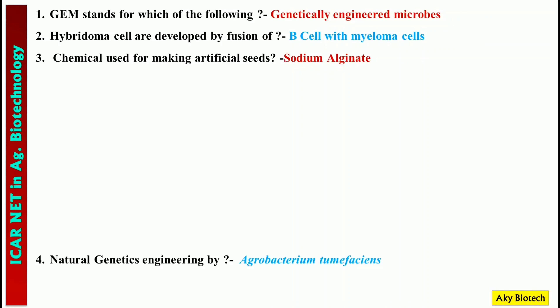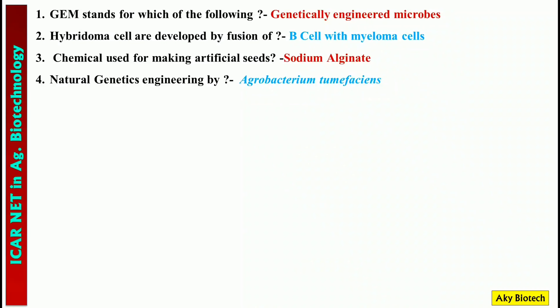Question 4: Natural genetic engineering is done by — Agrobacterium tumefaciens. Question 5: Father of plant tissue culture — it's G. Haberlandt.